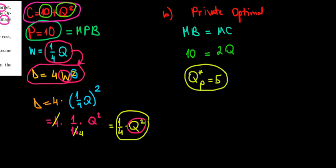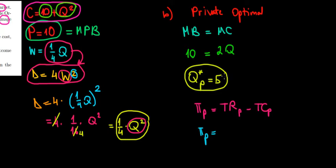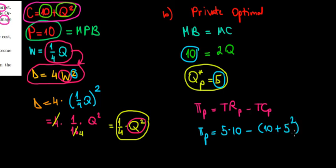With Q=5, what is the profit? The profit under private production equals total revenue minus total cost. Total revenue is 5 units sold at $10 each, so 5×10 = 50. The total cost function is 10 + Q², so that's 10 + 5² = 10 + 25 = 35. Therefore, profit equals 50 − 35 = 15.